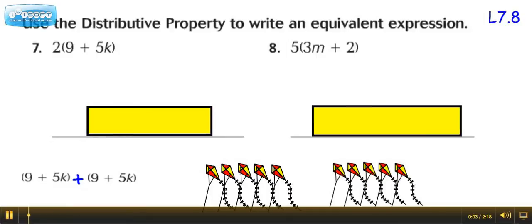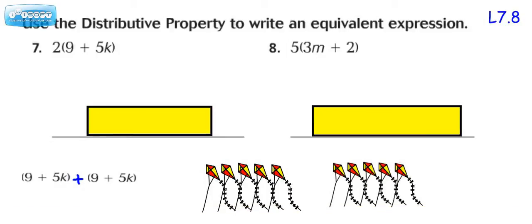Hey everybody, it's Ms. Dietrich helping you on Lesson 7.8. The directions say to use the distributive property to write an equivalent expression. And for number 7, they give you 2 times 9 plus 5k.